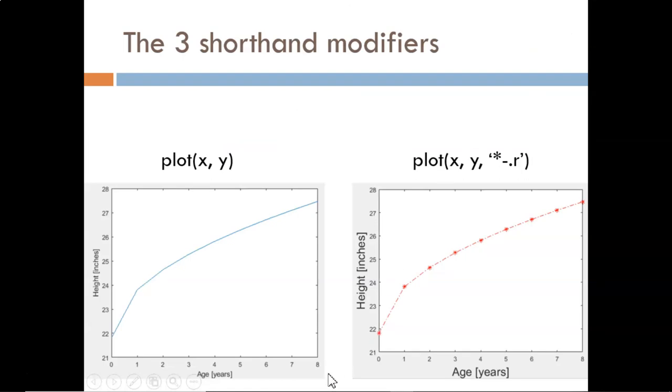Let's start with the three shorthand modifiers. For the plot on the right, the plot function used three input arguments: x vector, y vector, and a group of shorthand modifiers within single quotes.